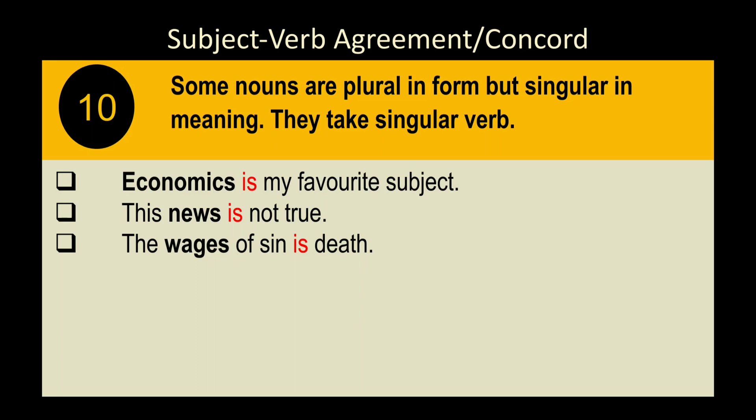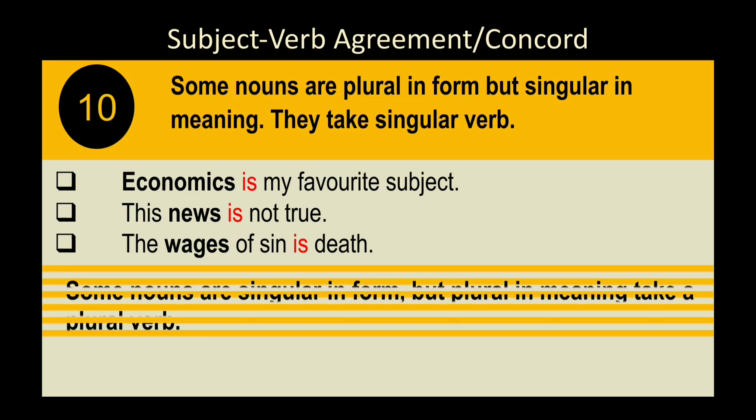Rule 11: Some nouns are plural in form but singular in meaning — they take a singular verb. Examples: 'Economics is a subject,' 'The news is good,' 'Wages is...' — these nouns appear plural due to endings like '-s' or '-ics' but are actually singular in meaning, so we use 'is.'